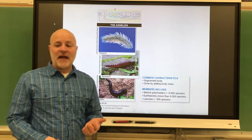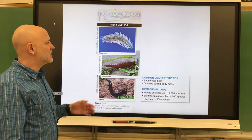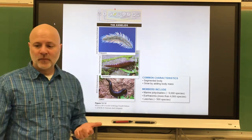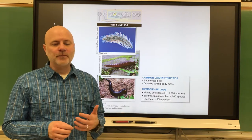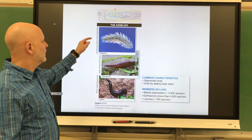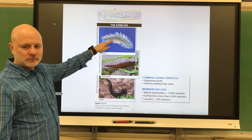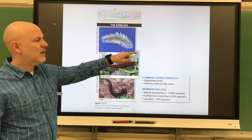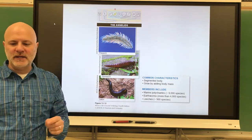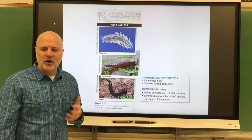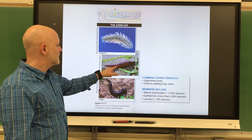Let's continue looking at the phyla of animals. Next are segmented worms, also known as annelids. These are earthworms, marine worms, and leeches. This earthworm, leech, and this polychaete — also known as a marine worm — are all coelomates and protostomes. They are segmented and bilaterally symmetrical, as you can see from the segments on them.